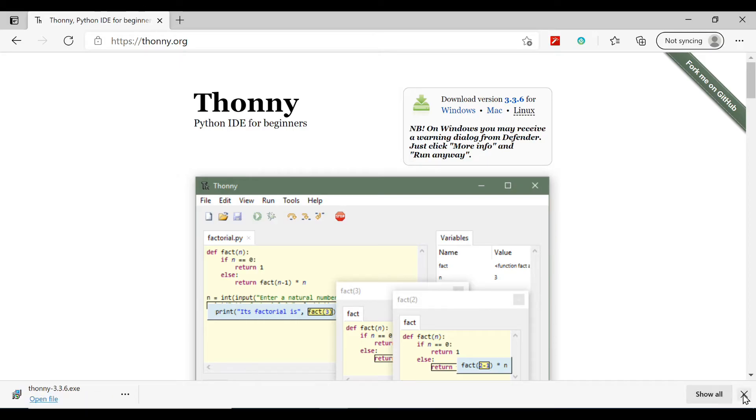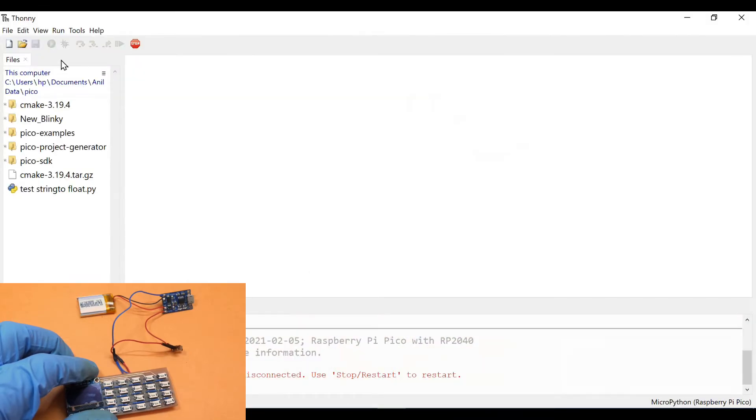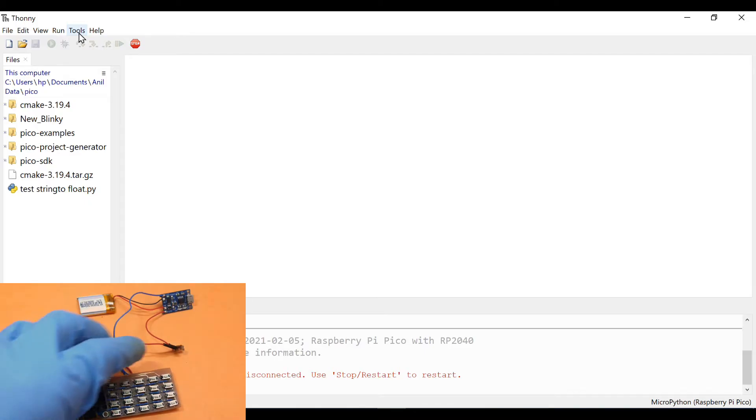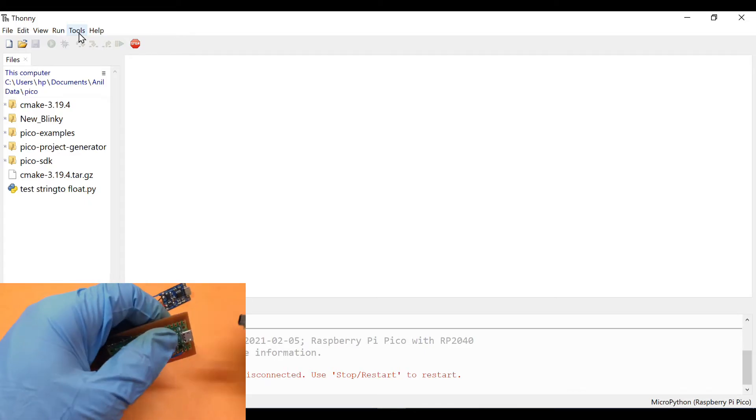Now first connect the Raspberry Pi Pico to our computer while pressing the boot select button. We will now flash the MicroPython firmware using the Thonny IDE.